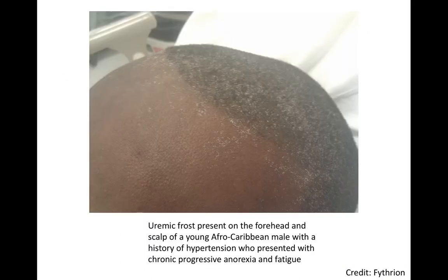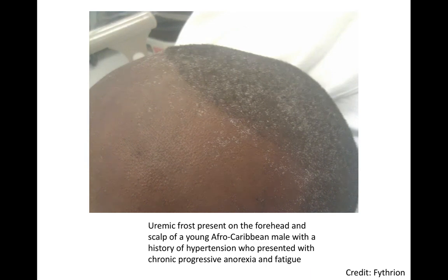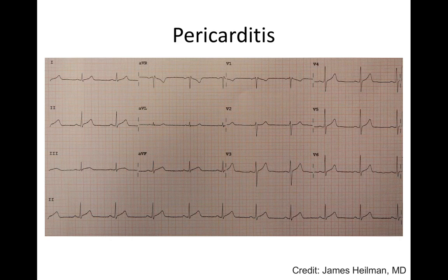An extreme example of severe uremia is uremic frost — deposits visible on the patient's forehead — related to badly controlled chronic kidney disease. It is very rare and rarely seen in practice, but often described in textbooks. Pericarditis can also be identified on ECG by widespread ST elevation across multiple leads, which would prompt further investigation and consideration of dialysis in a patient with AKI.